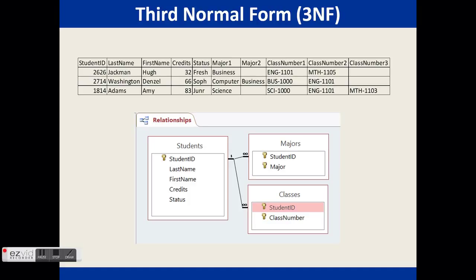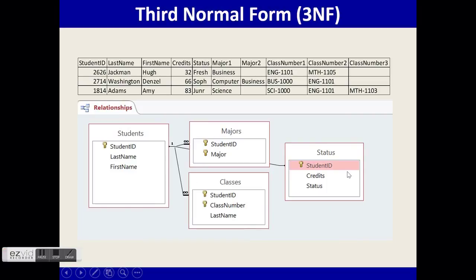These fields could be moved into a new table because they're not directly dependent upon the primary key. The design change to reach third normal form is to break the students table down further and create a new status table, removing those two fields into a table that has a better relationship. So students would only contain student ID, last name, and first name, and the status table would contain credits and status.